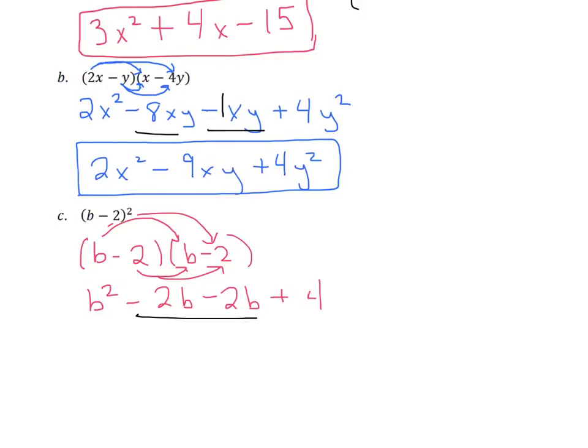We can combine these like terms in the middle, and we're going to have our final answer is going to be b squared minus 4b plus 4. So as you can see here, we really are just FOILing, which all FOILing is, is we're essentially just doing the distributive property twice.